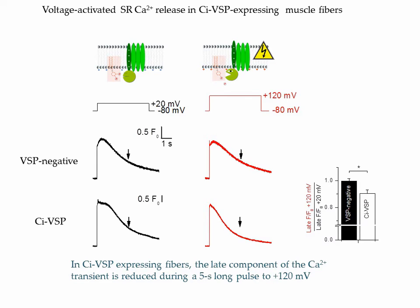Now this is a situation which is a bit complicated, because we suspect that during such a long pulse it would take time for the VSP to substantially deplete PIP2. At the same time, we know that during such a pulse, calcium release goes through a very fast initial peak and then decays very rapidly during the pulse. So probably not the best situation to test the effect of PIP2 depletion on calcium release.